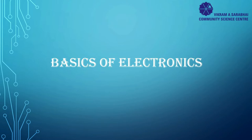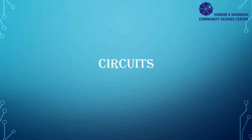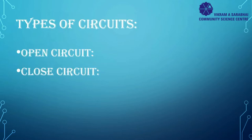Today we will talk about basics of electronics. When we talk about electronics, the first thing that comes to mind is a circuit. So what is a circuit? A circuit is a closed path through which a current can flow. There are two types of circuits: one is an open circuit and the other is a closed circuit.